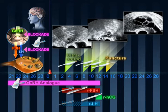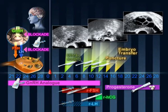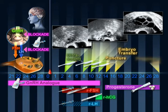Following the procedure, a daily supplement of the hormone progesterone is given vaginally. 2-5 days after oocyte recovery, the embryos are transferred. 2 weeks later, a pregnancy test is performed.